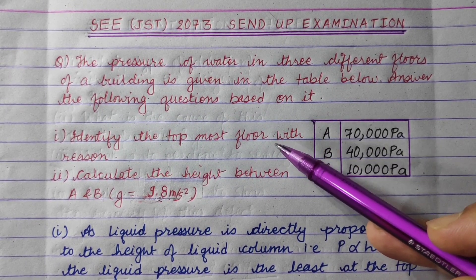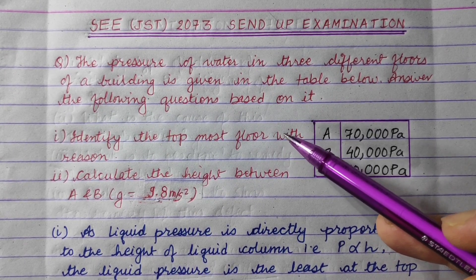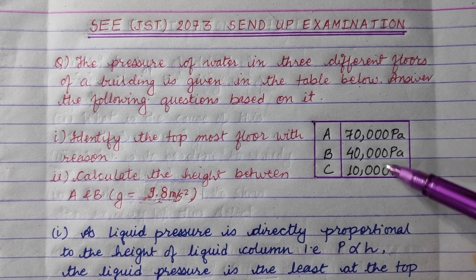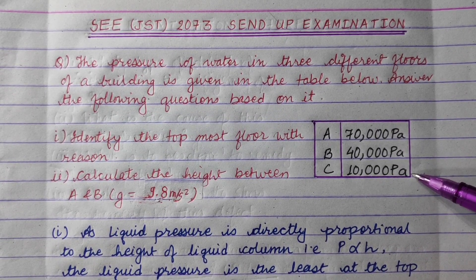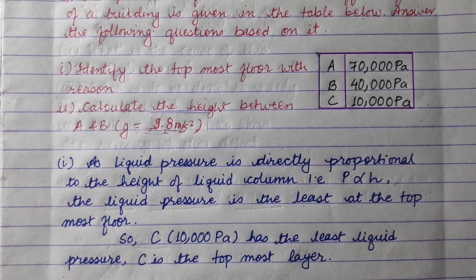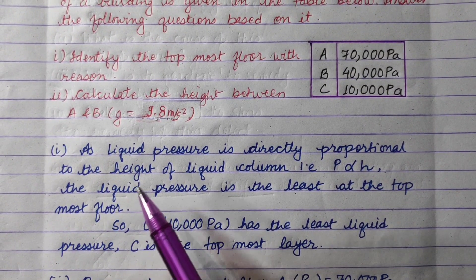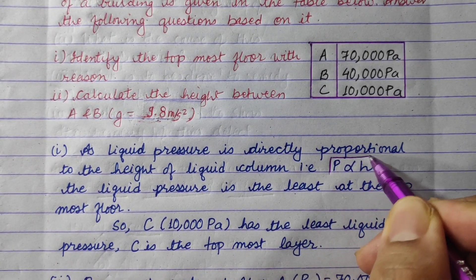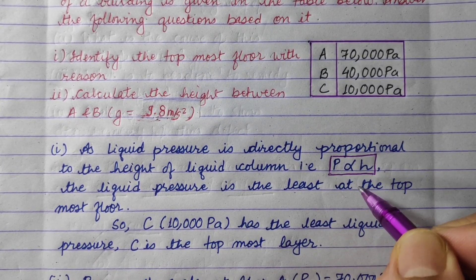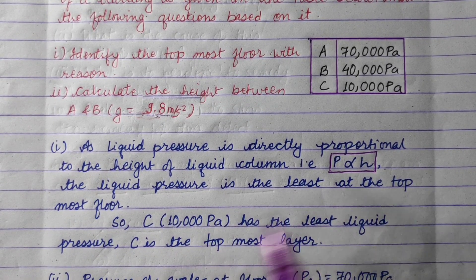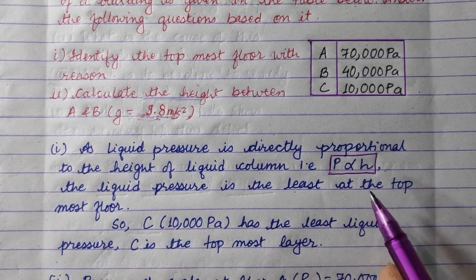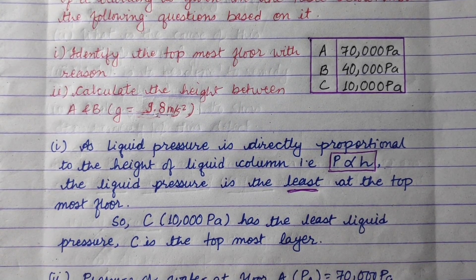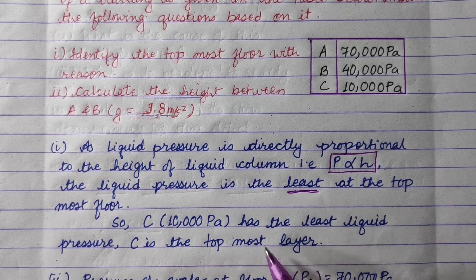The topmost floor has the least height of liquid column. The liquid pressure is directly proportional to the height of liquid column, so the topmost floor has the least pressure. So C, which has 10,000 Pascal, has the least liquid pressure.